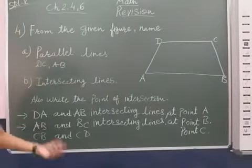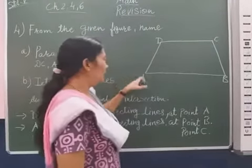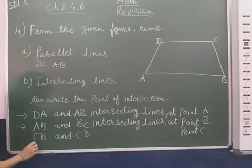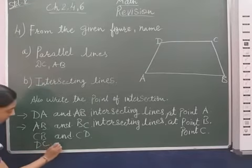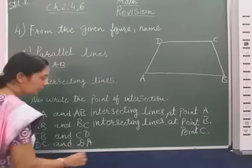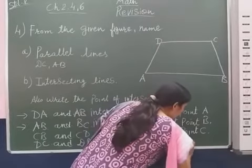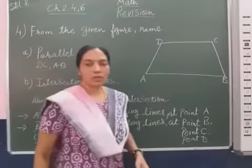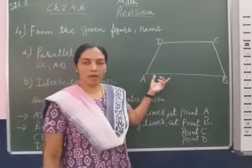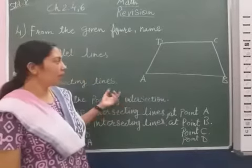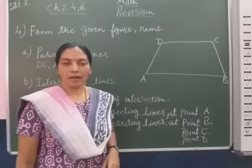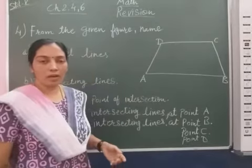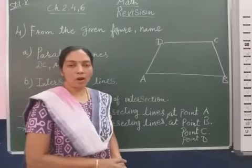One more: DC and DA also intersect, and DC and BA are intersecting lines that intersect at point D. So students, if this kind of figure is given, you can easily name which lines are parallel and which are intersecting lines. If the figure forms a perpendicular line or an angle, we can identify that too.